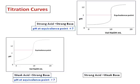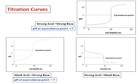And similarly, if I have a strong acid-weak base titration, the equivalence point will be, pH at the equivalence point will be less than 7.